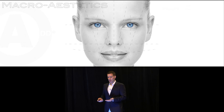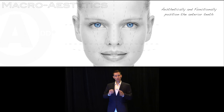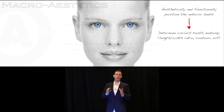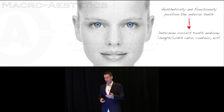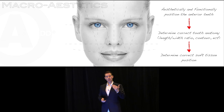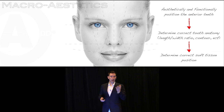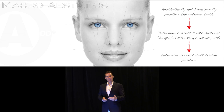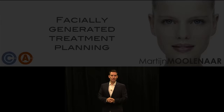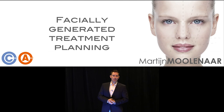Facially generated treatment planning starts with aesthetically and functionally positioning anterior teeth in the correct position. Then determine ideal anatomy of tooth and teeth and molars — length-width ratios, contour, etc. And then determine if soft tissue is in the correct position or if we have to alter it. This is the sequence I run through with every case. It's a step-by-step approach you can explain to your patients, and they are most of the time willing to undergo the treatment because they understand the problems behind it. So, facially generated treatment planning — and maybe we see each other in the future. Thank you for your attention.